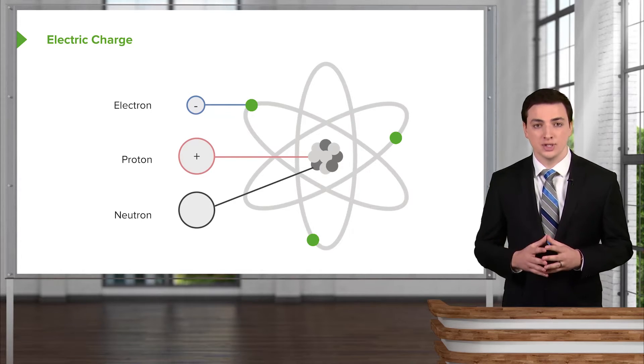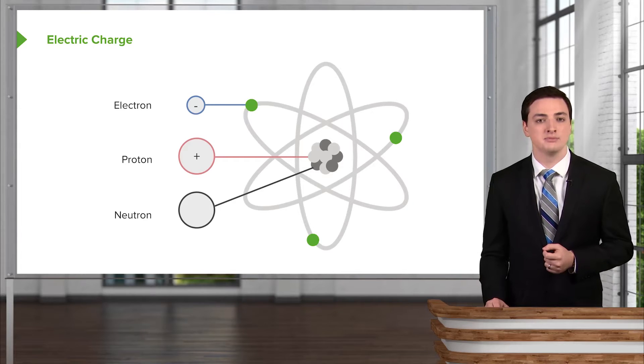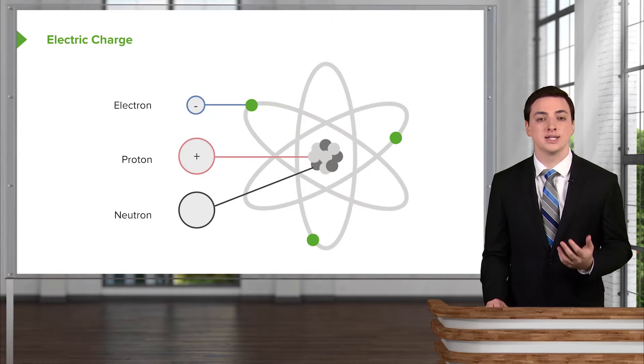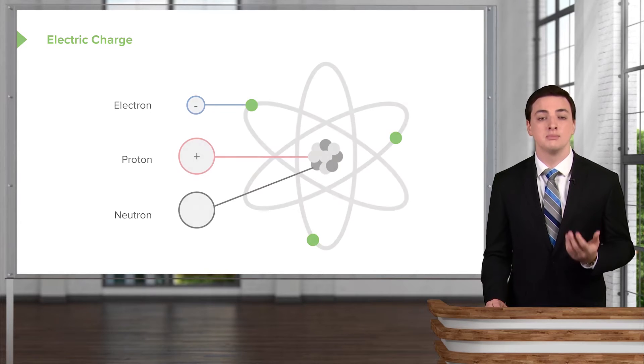Orbiting this nucleus we have what are called electrons, which are very tiny bits of matter, which have negative charge, as opposed to the protons in the center of the atom in the nucleus, which have a positive charge.